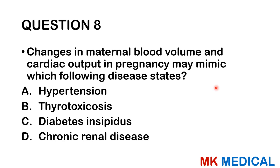Question eight: Changes in maternal blood volume and cardiac output in pregnancy may mimic which of the following disease states? A, hypertension; B, thyrotoxicosis; C, diabetes insipidus; D, chronic renal disease. Remember that in pregnancy, cardiac output changes and blood volume changes — one cause of high output cardiac failure is actually pregnancy and even thyrotoxicosis. Most likely the answer is thyrotoxicosis.